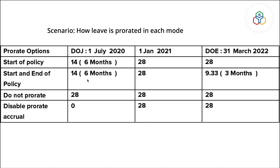In 2020 they will receive 14 days for the remaining 6 months. In 2021 they receive 28 days, and since they exit in March 2022, they will receive 9.33 days for the 3 months of that year. Under Do Not Prorate, the employee will receive all 28 days for all the years irrespective of their date of joining or exit.